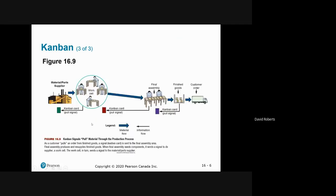Kanban cards are commonly used in many companies. It's called a pull system because rather than receiving product whether you need it or not, you only get product when you signal that you want more — like putting your hand up and saying you'd like water at your table, rather than a waiter filling your glass whether you want it or not. There can be a lot of waste in a push system. With a pull system, you don't receive anything unless you send a Kanban signal indicating you actually want the item. And that is Chapter 16.